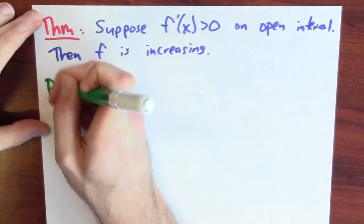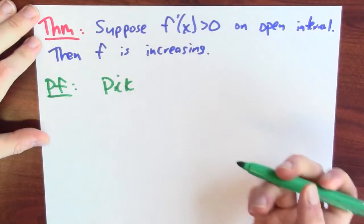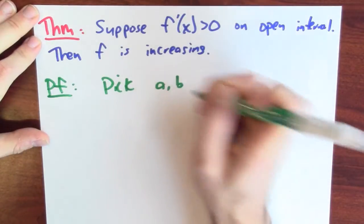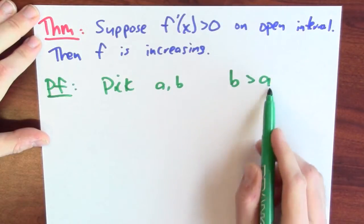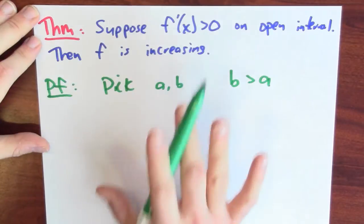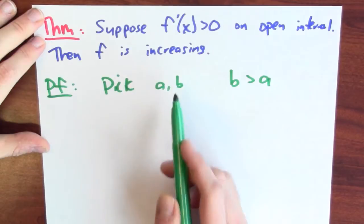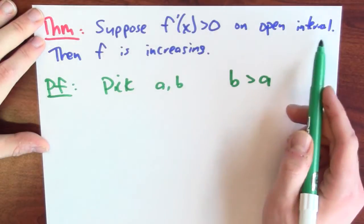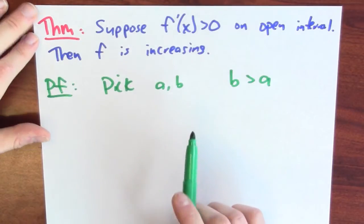The mean value theorem lets us verify that it's actually true. Let's prove this result. I'm going to pick two points A and B, making sure to pick them in order, so B is bigger than A, so I can talk about the interval AB. Now I'm going to apply the mean value theorem to the open interval AB. I'll pick A and B to be in this open interval, and since F is differentiable, it satisfies the conditions of the mean value theorem.